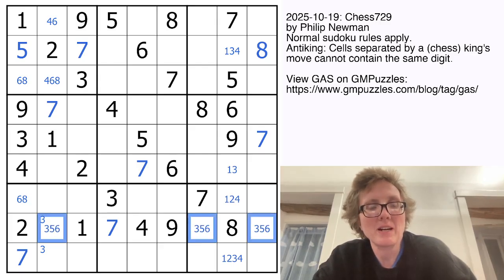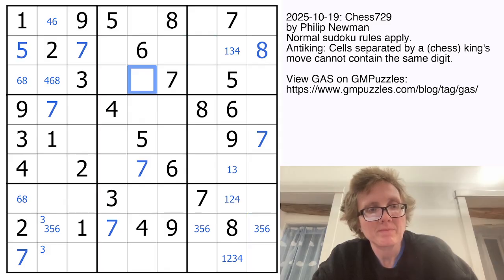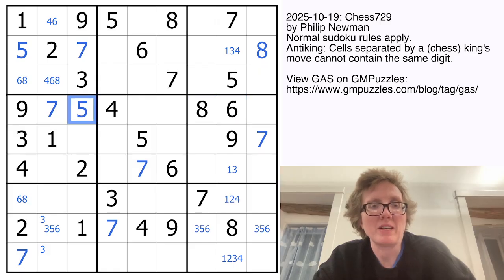Here we're going to need 3, 5, and 6 to finish this row. We can just pencil that in. In this region, we're going to need 5, 6, and 8. We have 6 and 8 here, so that's a naked 5. There's a 6 here, so that makes this the 8, and this the 6. That's not an 8. So that resolves our 6, 8 pair.